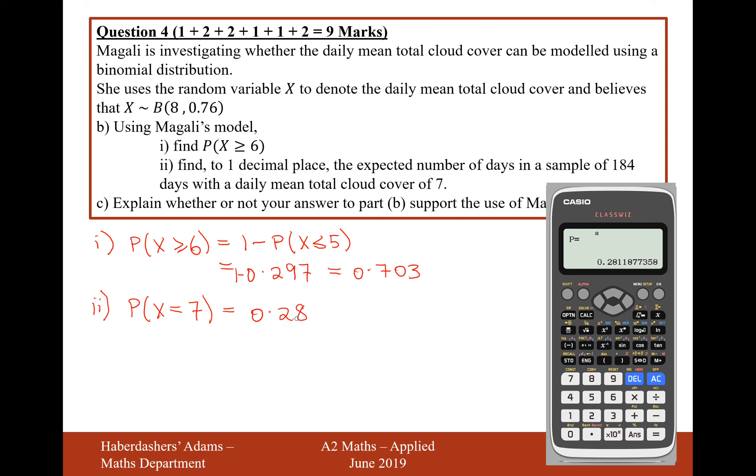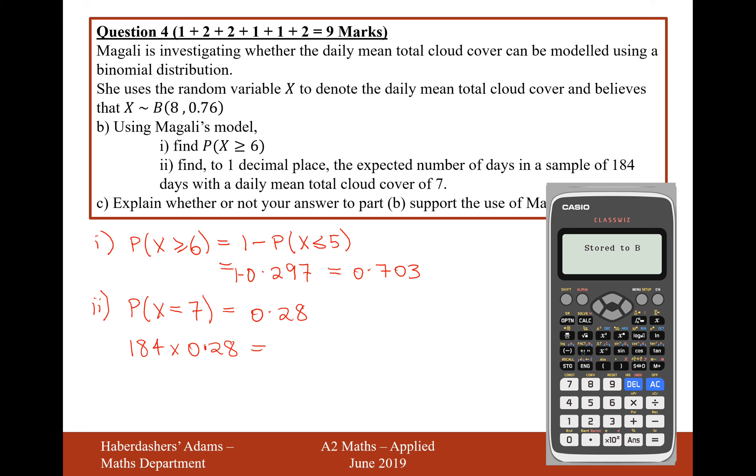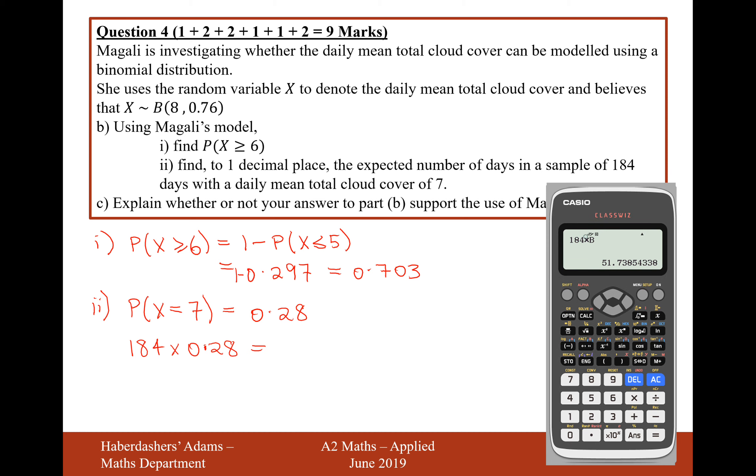And I get an answer there of 0.28. Now that's the probability of having 1 day on 7 octaves, but if I want to work out how many days out of 184 will have 7 octaves, I need to now do a calculation of 184 times 0.28, or that answer as close as we can do it. So I'll store that as b on my calculator, so store and b, and then I'll go back to my main mode on the calculator, and do 184 times 0.28, or times b, and that will give me 51.7 to one decimal place.